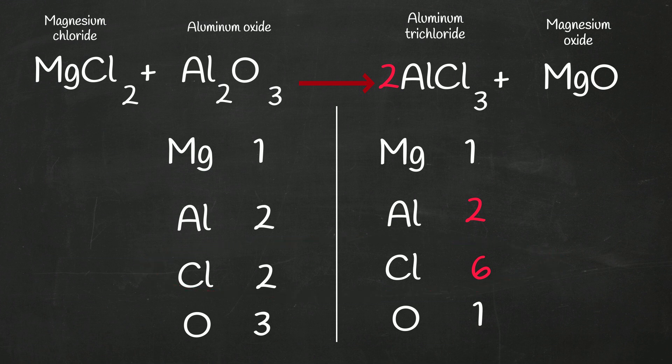So we need to increase the number on the left. So why don't we just multiply a subscript of three on the left and start multiplying. So now we have three magnesiums on the left. Okay, and we have six chlorines.